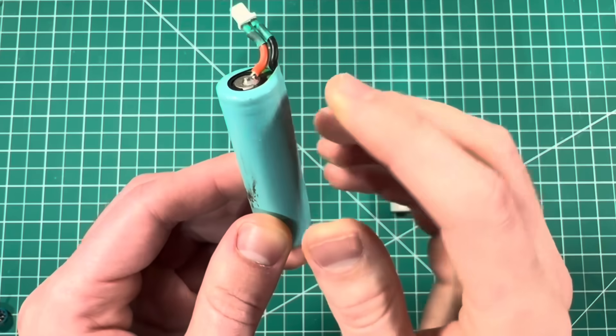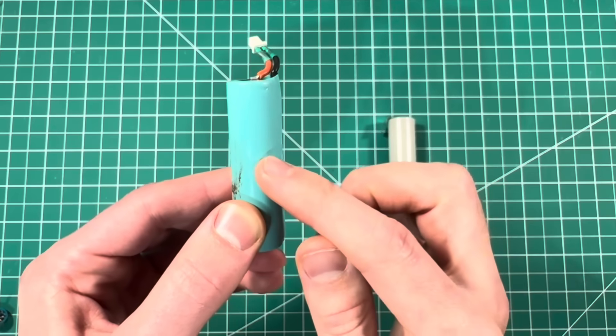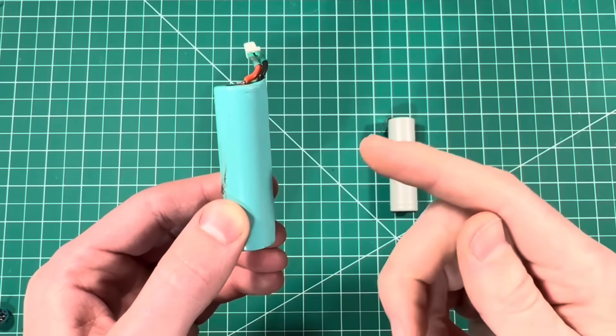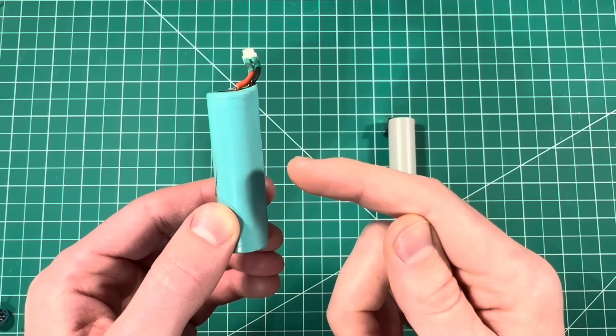Soldering directly to the cell adds too much heat to the terminals, which can damage the battery and worst case scenario, start a fire. This method is not recommended by the manufacturer, so do so at your own risk.